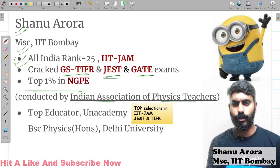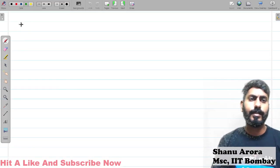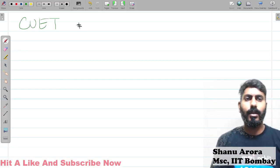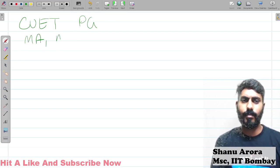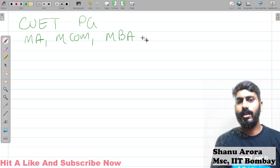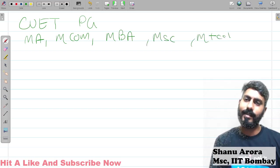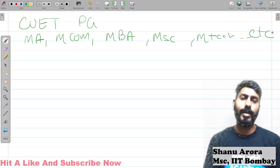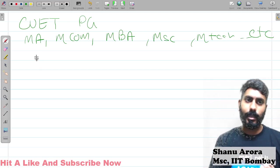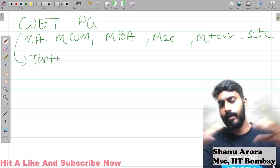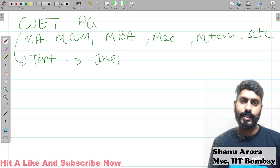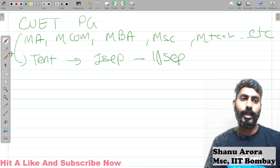Conducted by Indian Association of Physics Teachers. So basically aaj hum baat karne wale hai CU SET exam ke baare mein, CU SET PG. So basically agar MA, M.Com, MBA, or MSc, M.Tech etc, to ye in sab ke liye exam aur one month raha chuka hai. CU SET PG ki tentative dates aa chuki hai. Basically admit card nahi aaya lekin tentative date yahi hai ki first September se 11 September ke beech mein aapka paper hone wala hai.